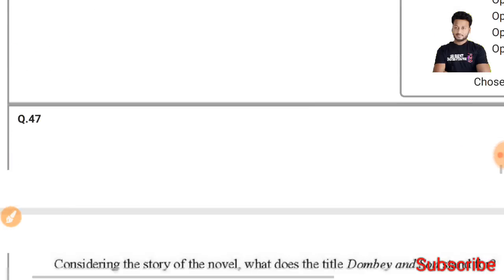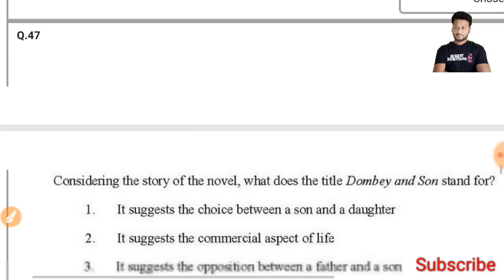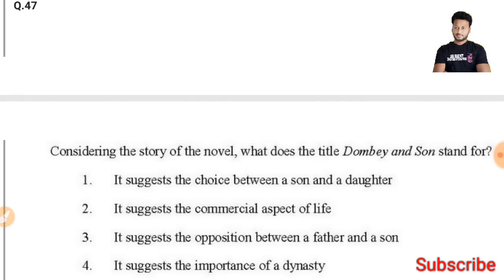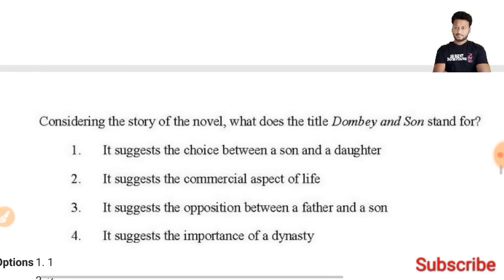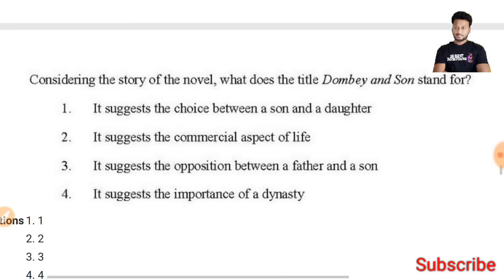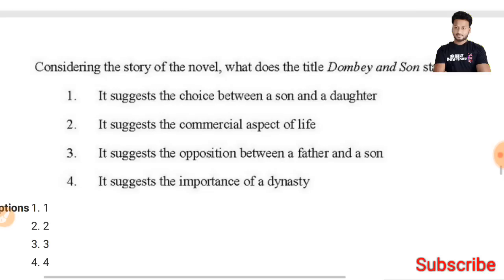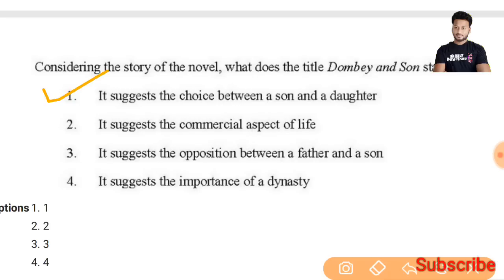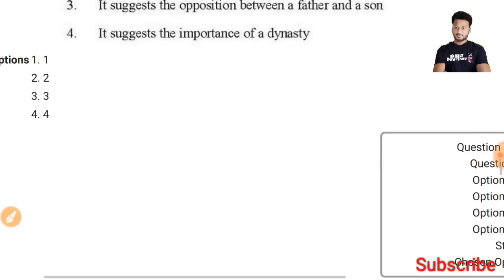Question 47: Considering the story of the novel, what does the title 'Dombey and Son' stand for? The right answer is that it suggests the choice between a son and a daughter — the first option is the right answer.